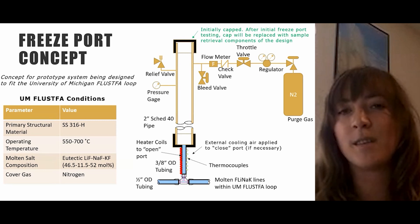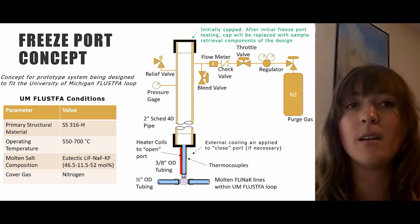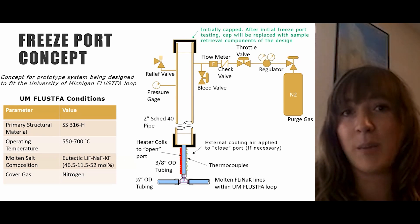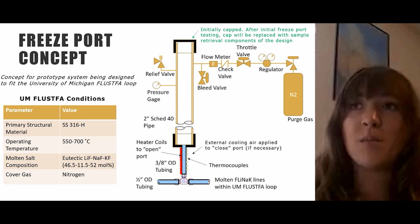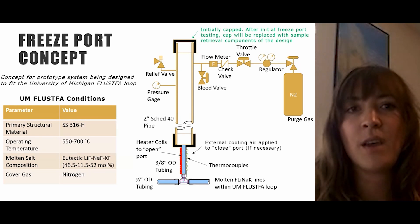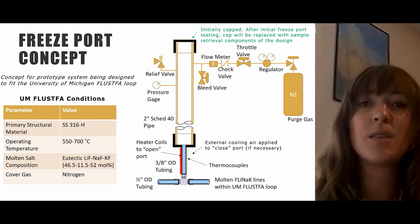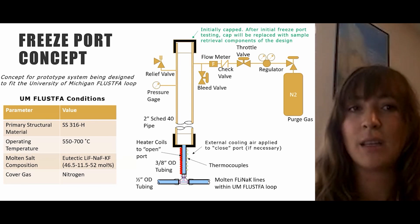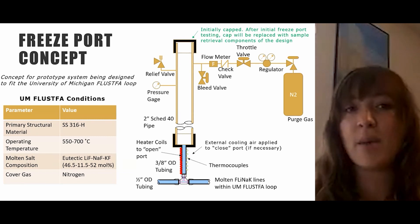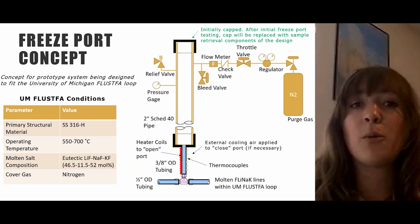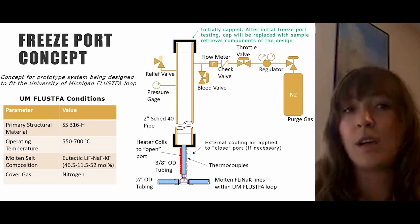Here on this slide is our first draft conceptual design for the interface between the molten salt sampling system and the fuel or coolant salt being sampled — specifically to be tested at the University of Michigan FLUSFA loop, a eutectic FLINAC loop operating between 550 and 700 degrees Celsius. From our evaluation of many sampling systems, we believe a grab sampling system in which a sample collection device is inserted directly into the salt is best suited to MSR salt sampling, since other methods relying on pulling off a small salt stream have historically posed representativity problems and, in a liquid-fueled MSR, may have safeguards and security implications.